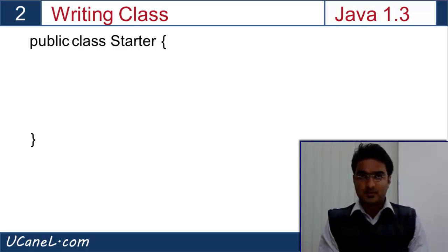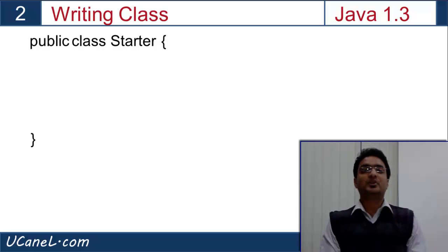We created a class, but right now it's blank. As we discussed, a class defines attributes and behavior. Attributes are class variables and behavior are its methods. So now we will create one method.